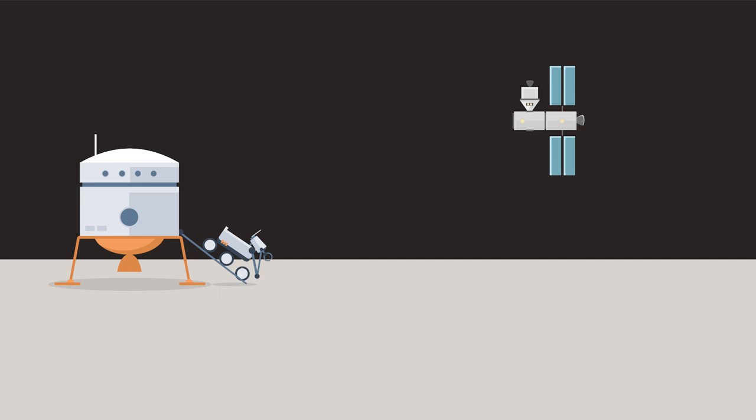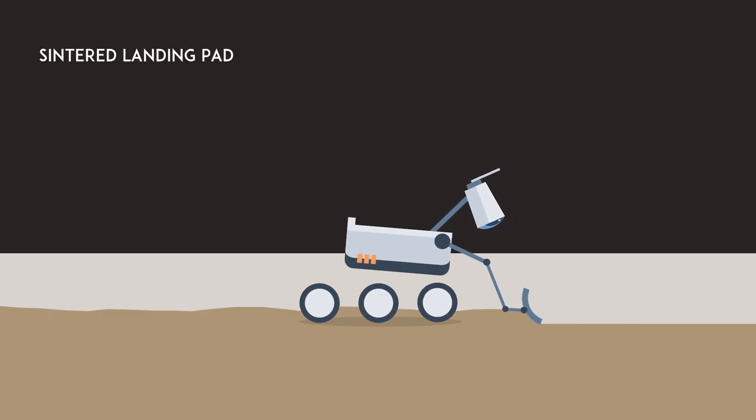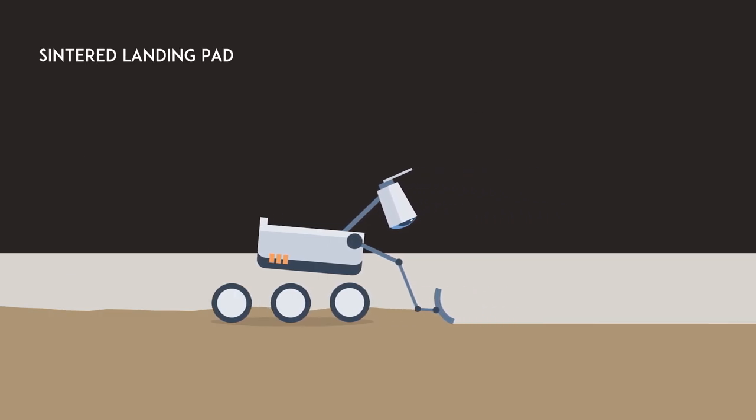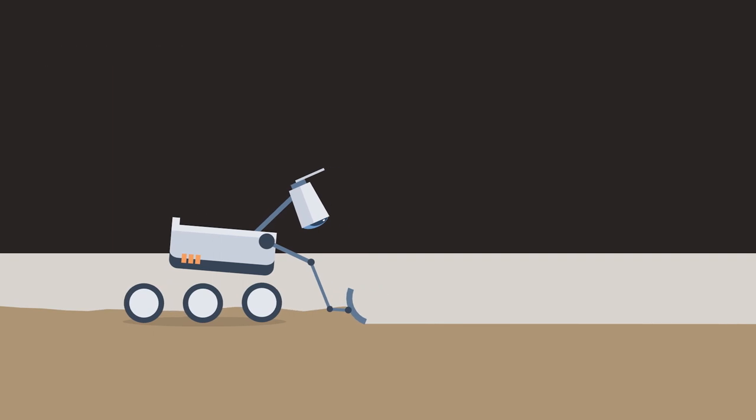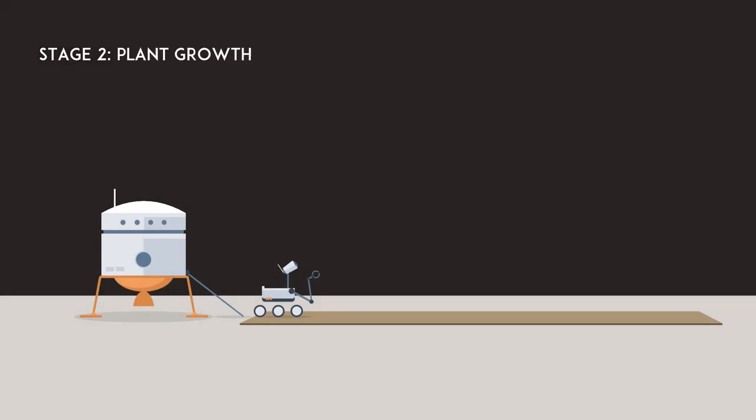The rover will be tele-operated by astronauts, who will then select suitable landing areas. The rover will then be used to sinter solid landing pads for future landers. This is a key technology demonstration of in-situ construction and will help Harvest achieve its second aim.